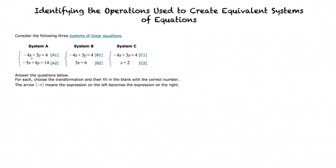System A: negative 4x plus 3y equals 4, then negative 5x plus 6y equals 14. System B: negative 4x plus 3y equals 4, and 3x equals 6. In System C, we have negative 4x plus 3y equals 4, and x equals 2.